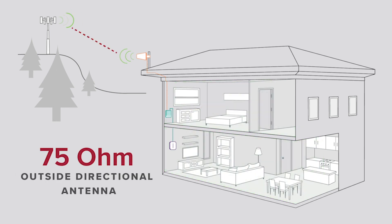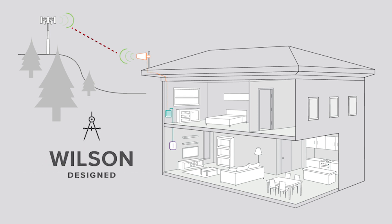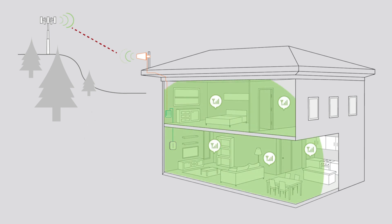Paired with the proprietary 75-ohm outside directional antenna, exclusively designed by Wilson engineers here in the U.S., the Home Complete pulls in strong cell signal with increased gain to help overcome poor indoor coverage resulting from blocked signal.